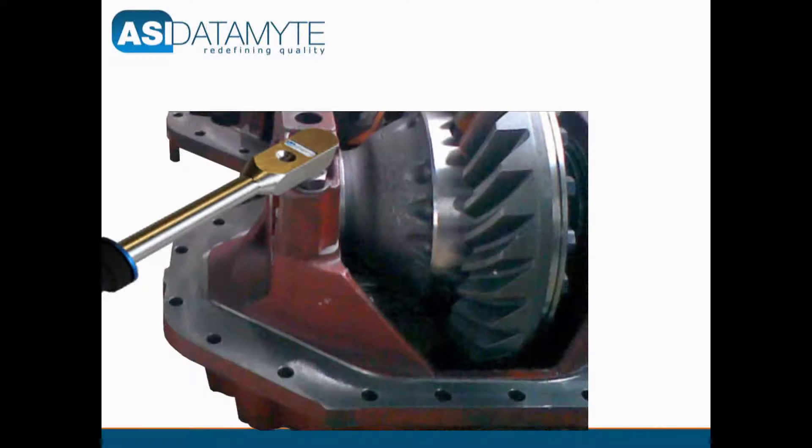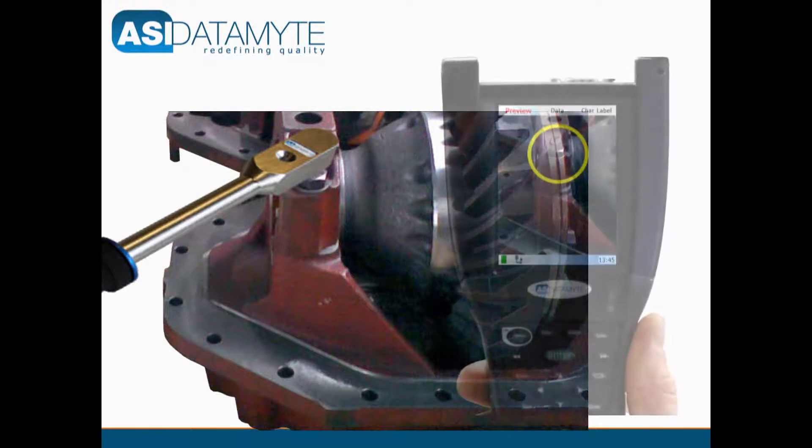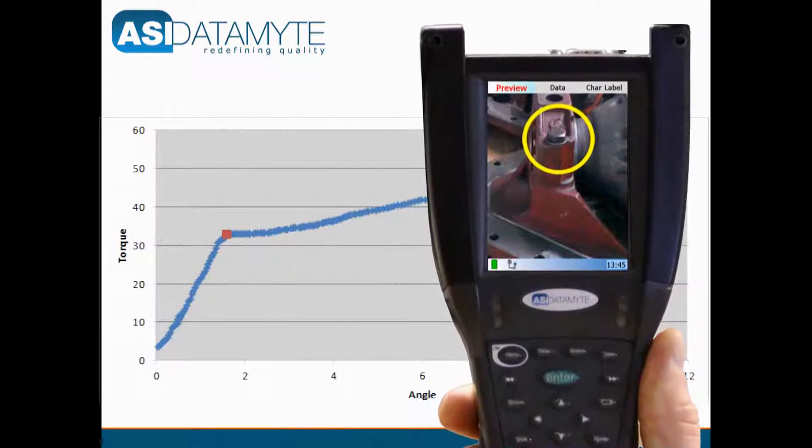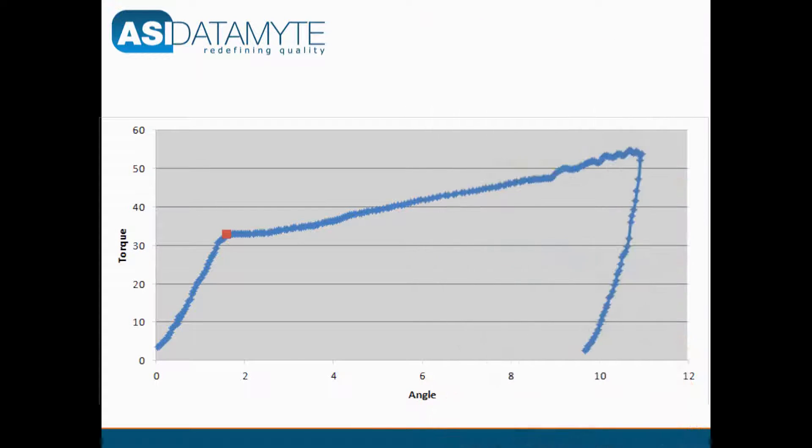As a threaded fastener joint is tested the 600 analyzes a torque versus angle curve to determine the start of fastener retightening rotation. The first leg of the curve shows flex in the wrench, socket, and workpiece of about 1.5 degrees to about 33 Newton meters.